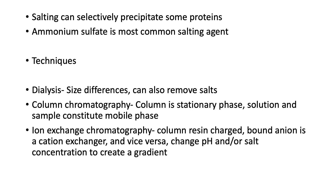Ammonium sulfate is a predominant salt used to selectively precipitate proteins. You can remove a given protein from solution depending on the concentration of ammonium sulfate used. You add it at the desired concentration, centrifuge, and precipitate either the part you want or the part you don't want and reconstitute it. Dialysis can then be used, relying on size differences through a permeable membrane, to remove the ammonium sulfate and reconstitute the protein.